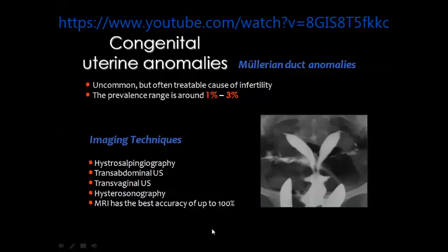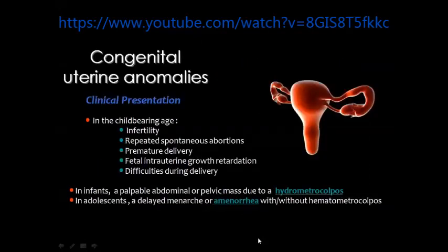These anomalies are diagnosed by various radiologic techniques. Hysterosalpingography was previously one of the major tools and is still used for evaluation of suspected uterine anomalies. Transabdominal and transvaginal ultrasound are among the most accurate tools for evaluation of congenital anomalies of the uterus.